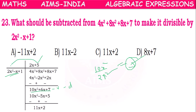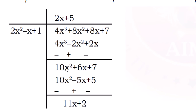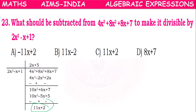With 5, we multiply all terms: 5 × 2x² = 10x², 5 × (-x) = -5x, 5 × 1 = 5. Then 10x² - 10x² cancel, 6x - 5x = 1x, wait — that gives us 11x, and 7 - 5 = 2. So 11x + 2 is the remainder. This is to be subtracted to make the expression completely divisible. So option C, 11x + 2, is the correct answer.